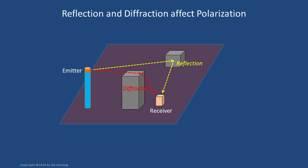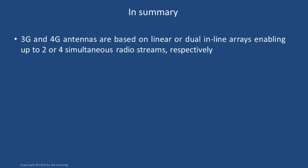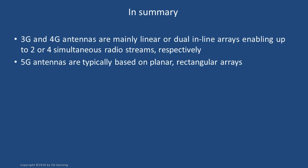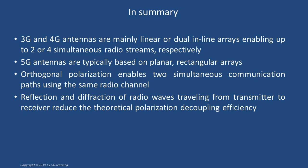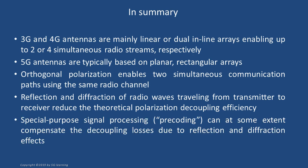We will not delve into this very interesting topic during this video, but hope to come back to it in the future. For the time being, let's just say that it is at the core of 5G technology and remains a rich research field. In summary, 3G and 4G antennas are based on linear or dual-inline arrays enabling up to two or four simultaneous radio streams respectively. In 5G, rectangular arrays become the preferred option. Orthogonal polarization enables two simultaneous communication flows using the same radio channel. Reflection and diffraction reduce the theoretical polarization decoupling efficiency, but pre-coding can, at some extent, compensate those losses.